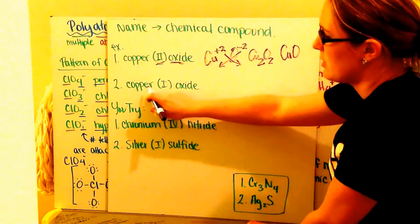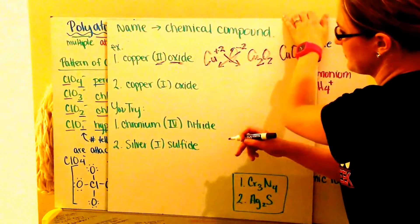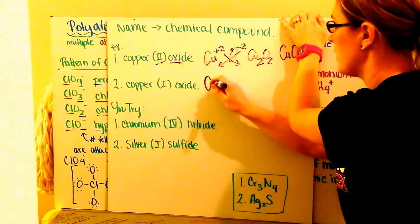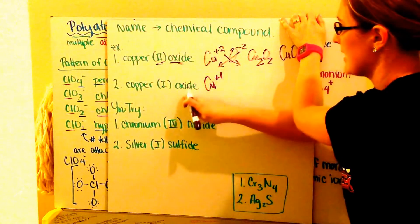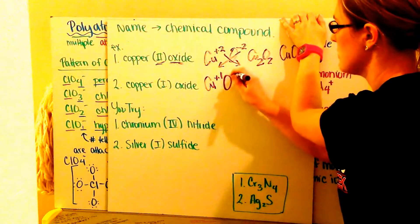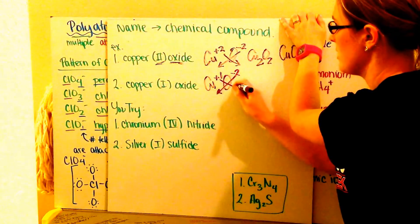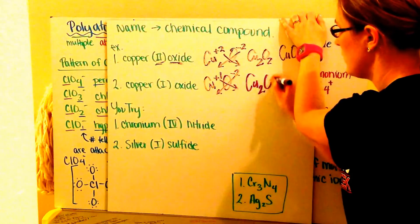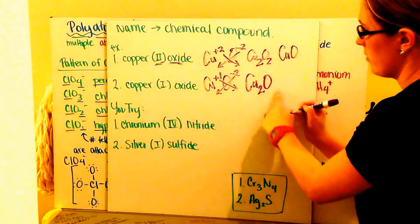Go on to number 2. Copper (I) oxide. Copper 1 tells me I have copper plus 1. Oxide again tells me I have oxygen minus 2. I crisscross my values down. I get Cu2O. Again, now reduced.